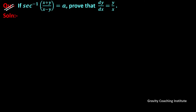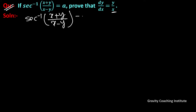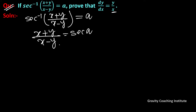Given sec inverse of (x plus y) upon (x minus y) equal to a, prove that dy upon dx equals y upon x. Here, we rewrite the given equation as sec inverse (x plus y) upon (x minus y) equal to a, which means (x plus y) upon (x minus y) equal to sec a.